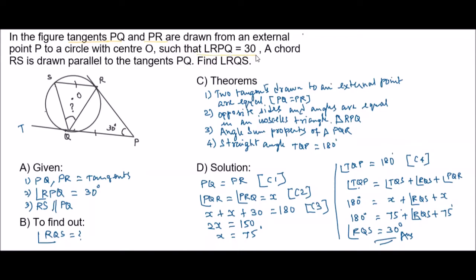So first we need to find the angle RQS. Note down all the given points: PQ and PR are the given tangents and they are equal. The angle RPQ is 30 degrees. The chord RS is parallel to the tangent PQ. We need to find the angle RQS.